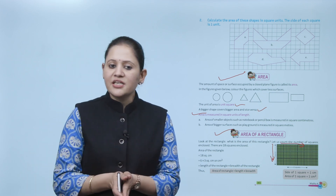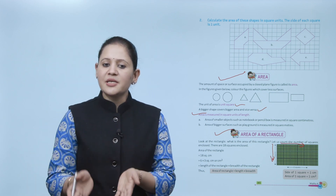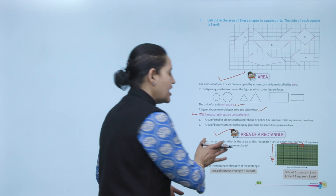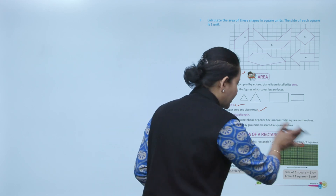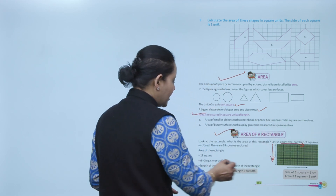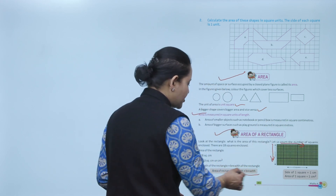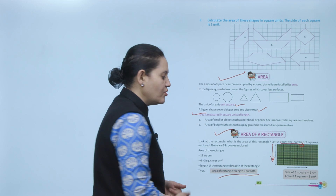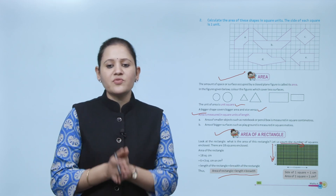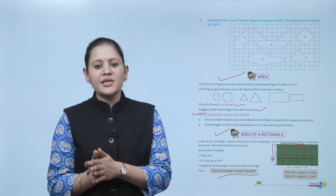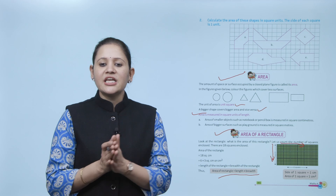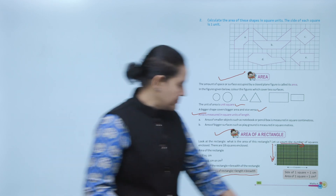The area of a rectangle equals length of the rectangle multiplied by breadth of the rectangle. So area of rectangle equals length into breadth. Side of one square equals one centimeter, and area of one square equals one centimeter square.